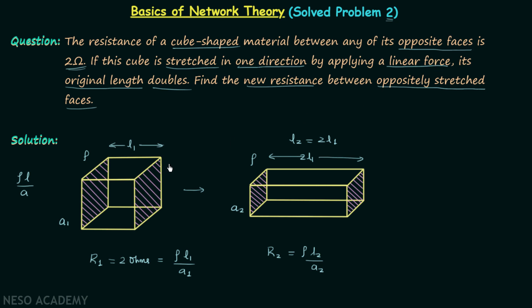The amount of material remains the same, so the volume in the first case will equal the volume in the second case. Volume equals area multiplied by length, so A1 times L1 equals A2 times L2.